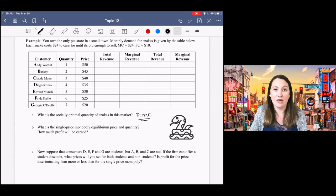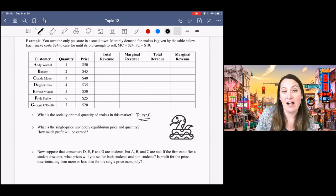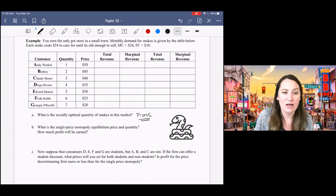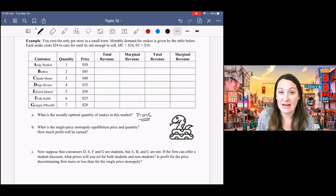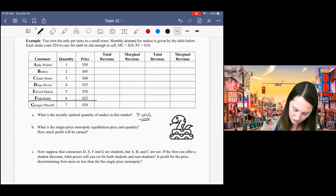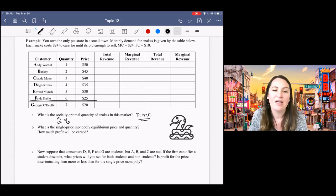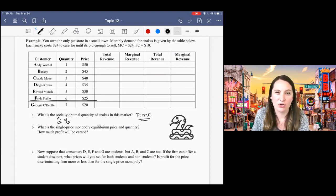So we can see the first part here is asking for the socially optimal quantity. Remember, that's like competition where price is equal to marginal cost. One way to think about that is from the perspective of society, we only want to produce something if someone values it more than the cost of production. So as long as someone values this snake more than $24, then we're going to keep producing. And that stops being true here, right after Frida Kahlo. So we've got a quantity of six snakes that we're going to sell in this market if it's competitive. And that's also the socially optimal quantity.